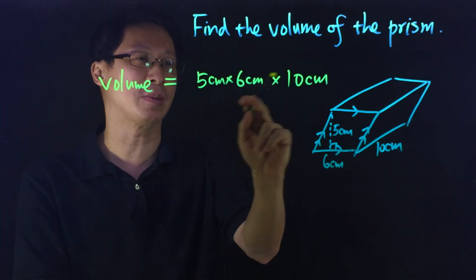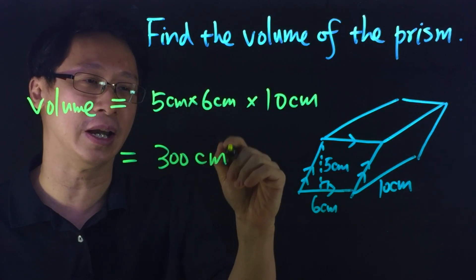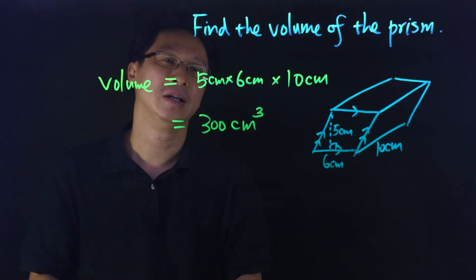We just multiply these three numbers together and we have 300 cm³. Don't forget to use the proper units—it's cm to the power 3, or cm cubed.